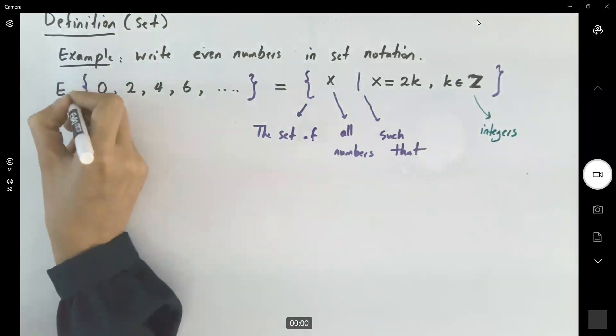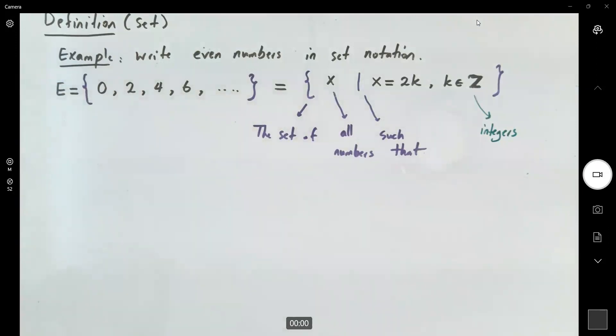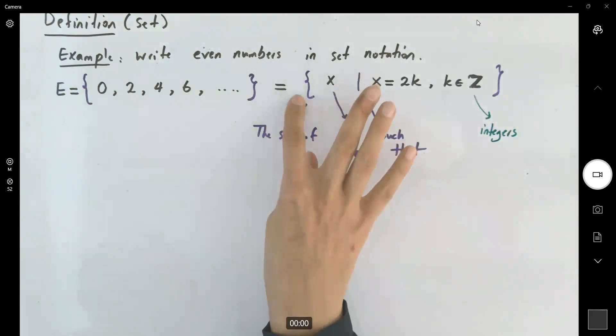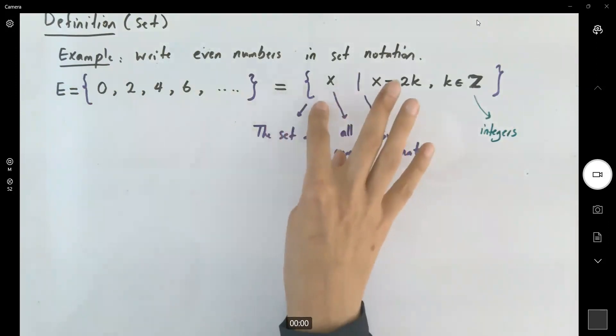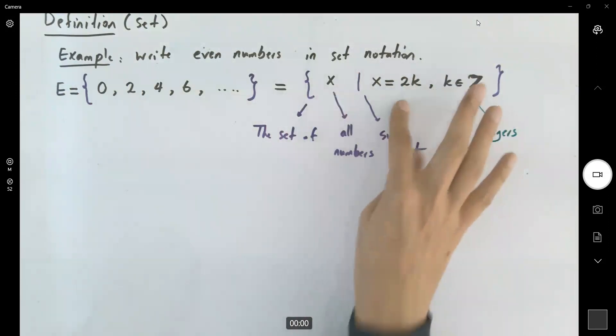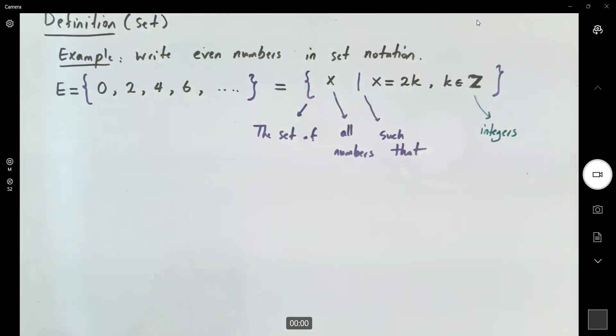So you might be able to just list some of the numbers: 0, 2, 4, 6, and so on. Or you're going to use the set notation x such that x equals 2 times K.